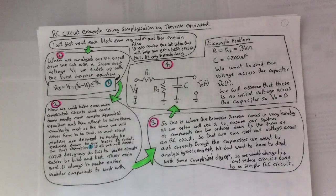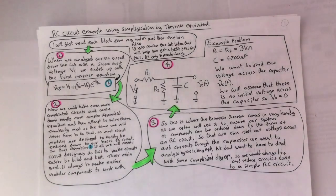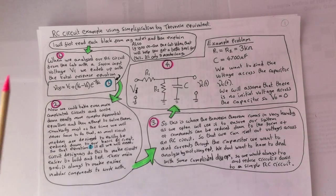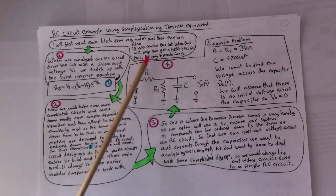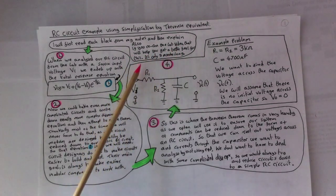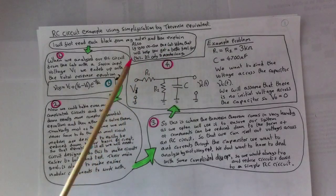RC circuit example using simplification by Thevenin equivalent. I will first read each block from my notes and then explain. Also if you rerun the lab video that will help you get a better feel for this, it's only about three minutes long so you might want to run that first.